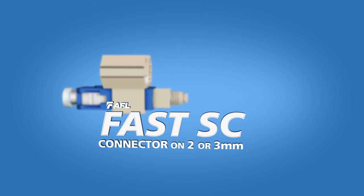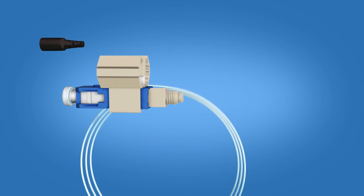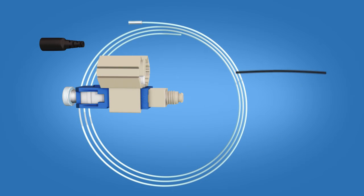The Fast SC connector kit contains the following items: a 900 micron boot, clear protective tubing, 250 micron tubing, and a Fast SC connector.